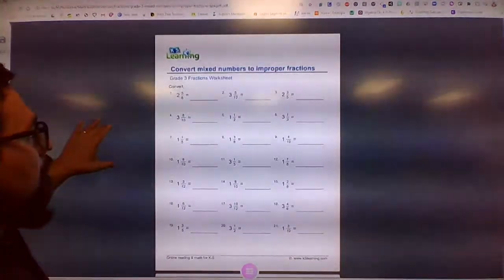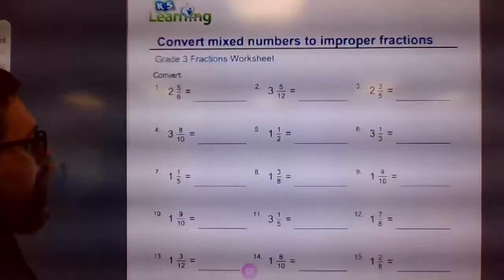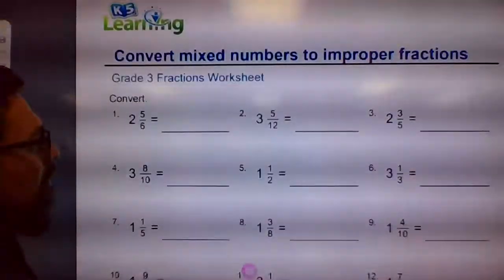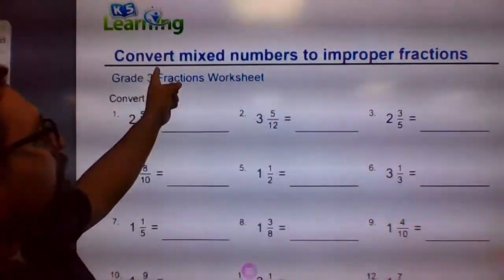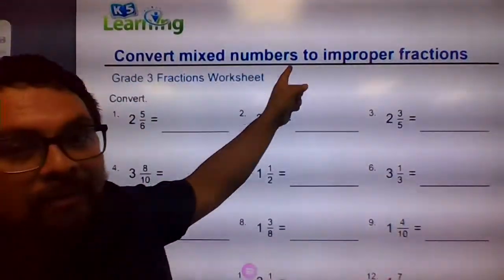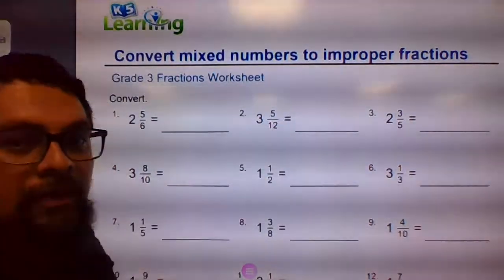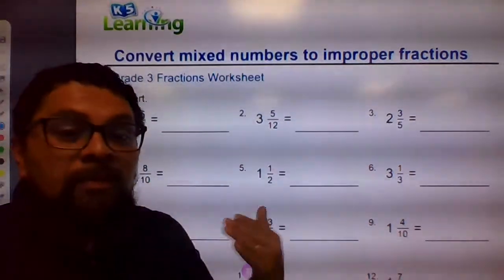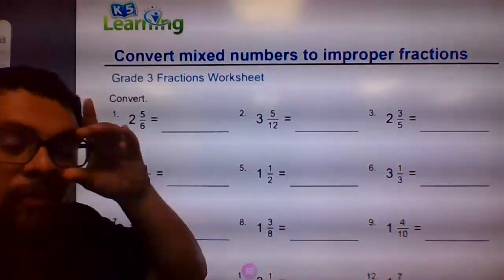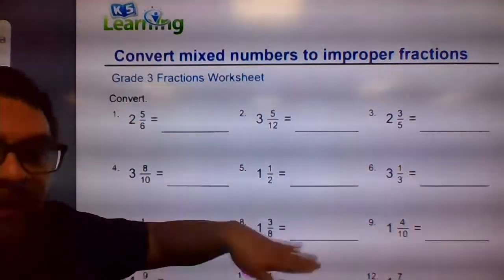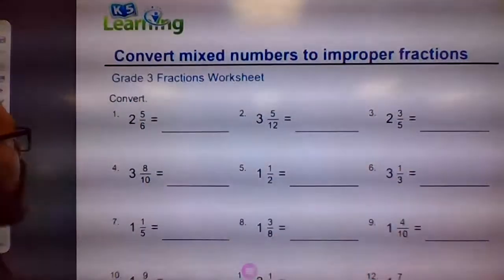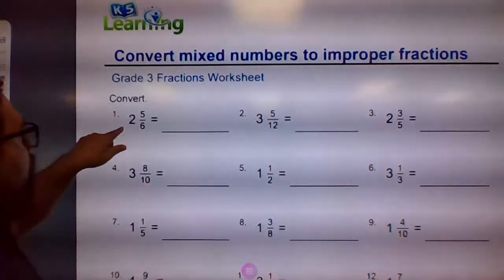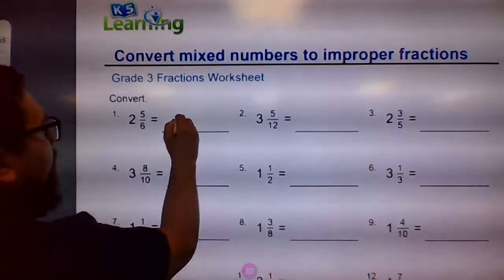So on page 9, you're going to convert mixed numbers to improper fractions. Some of you probably remember this, so we'll go ahead and do it and then go from there. On number one, to convert this you have to convert it to a regular fraction.